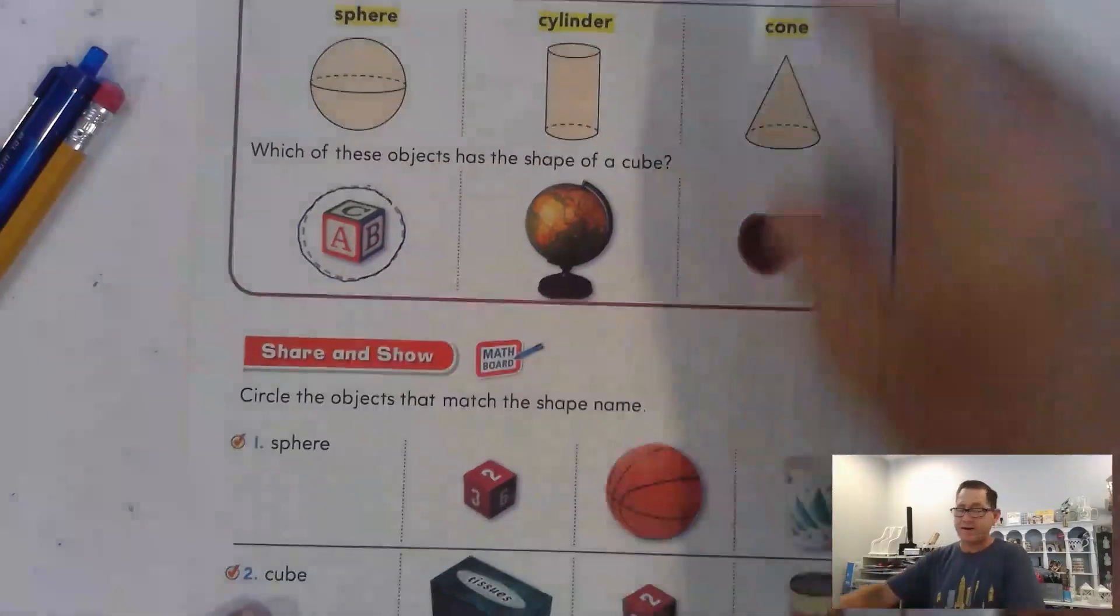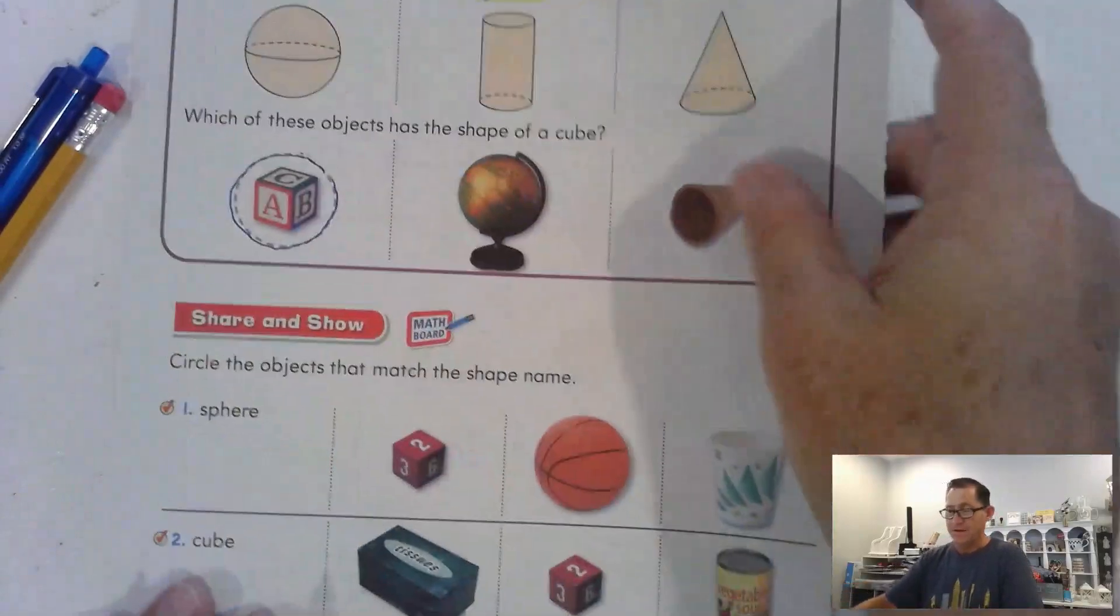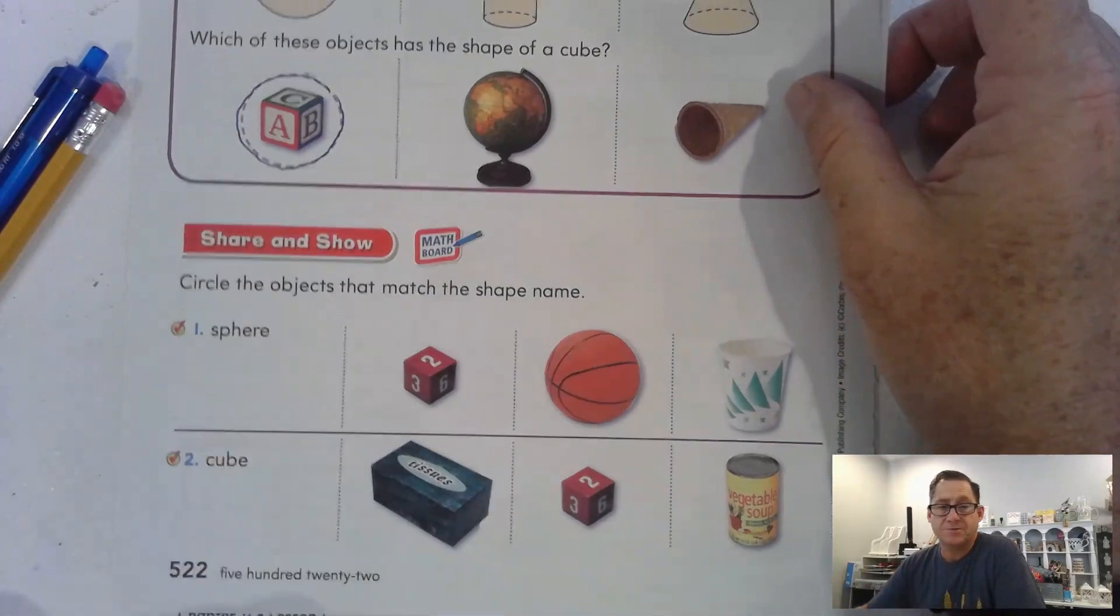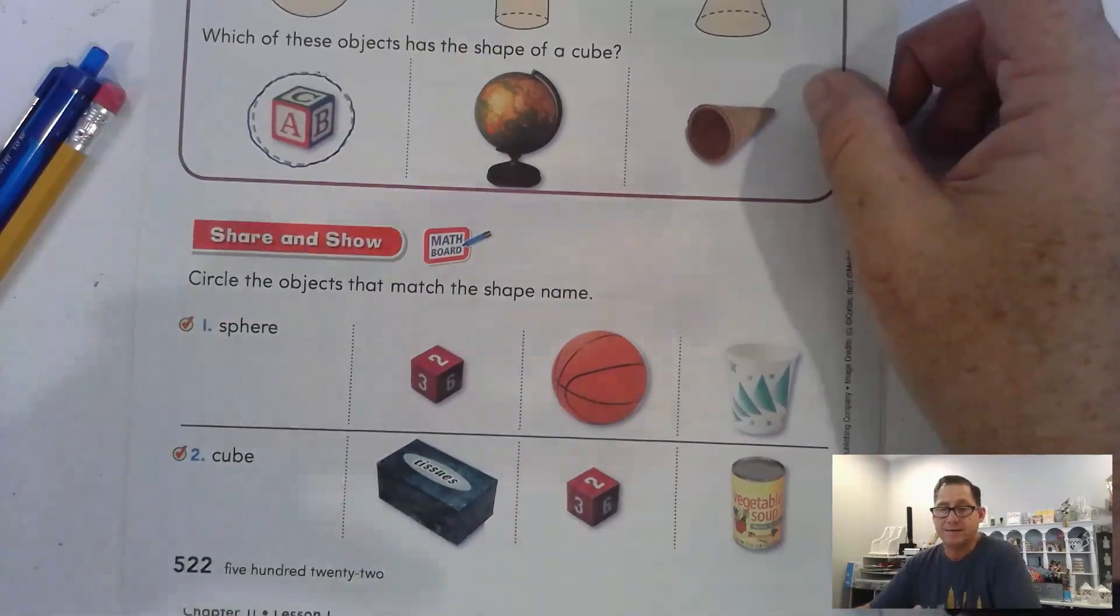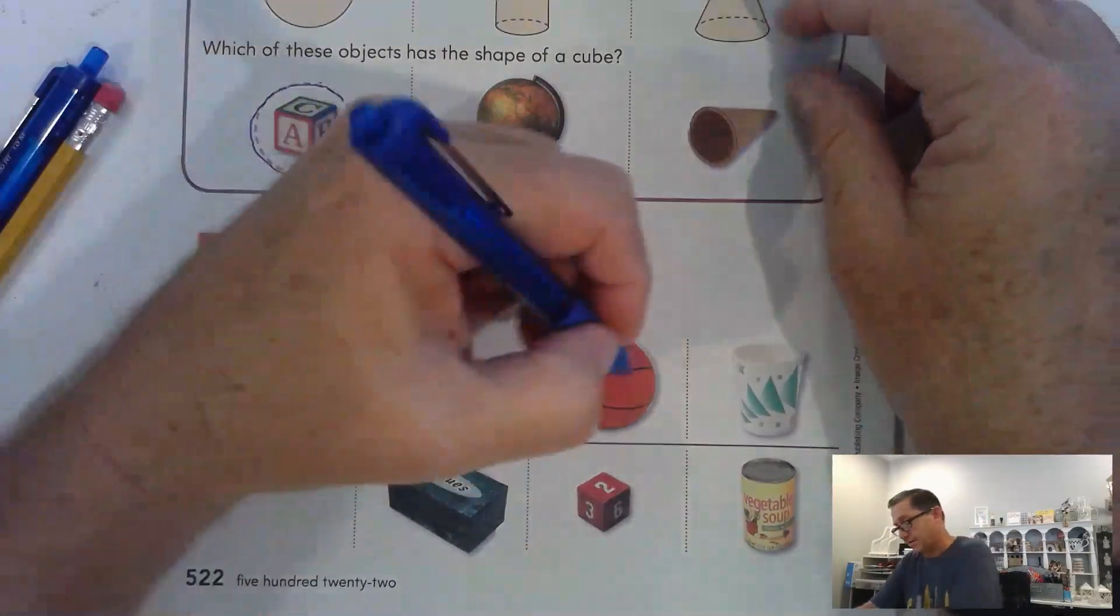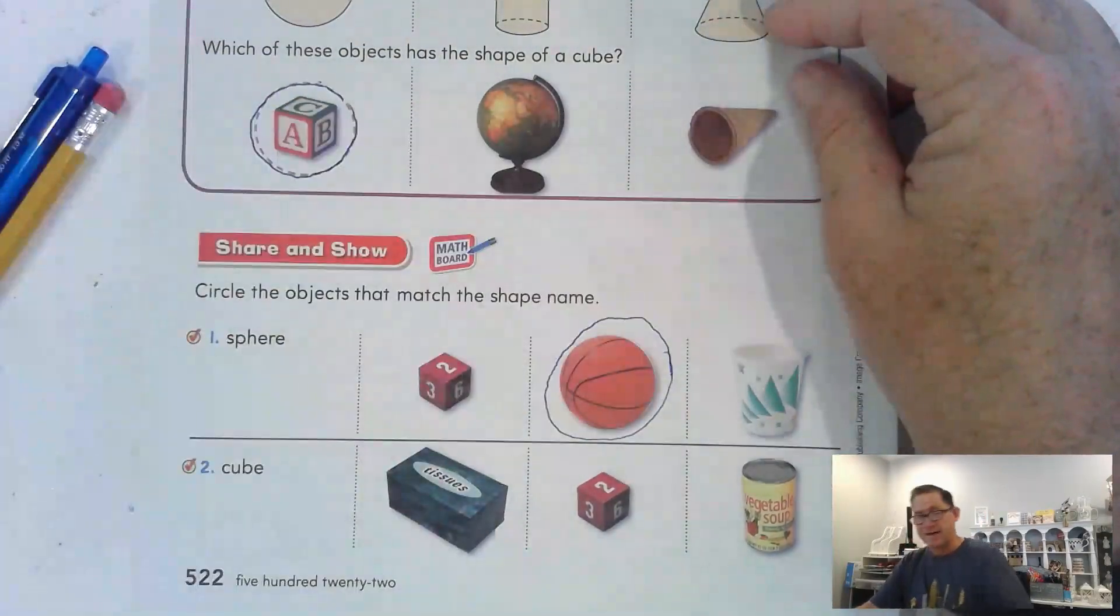Alright, so circle the objects that match the shape name. If you want to pause the video, go through the pages, and circle the answers that you feel are correct, and then come back and check your work, feel free to do so. So a sphere, you should have circled the basketball.